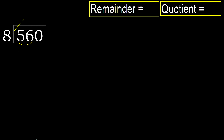Multiply by which number is nearest to 56 but not greater. 8 multiplied by 8 is 64, which is greater. Multiply by 7 — 56 is not greater. Subtract 56 minus 56 equals 0.